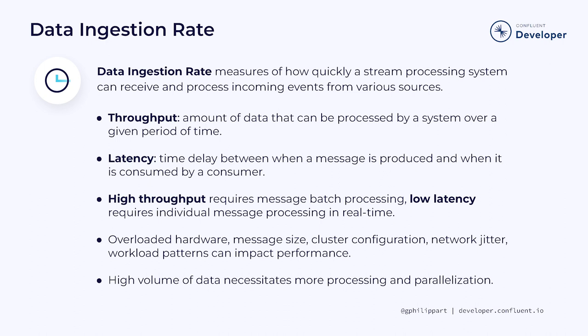An important question you must ask yourself is what kind of volume of events will be generated by the data sources and how fast do you need to process it? The data ingestion rate requirement measures how quickly a stream processing system can receive and process incoming events from various sources. Throughput refers to the amount of data that can be processed by a system over a given period of time, typically measured in messages or bytes per second. Latency, on the other hand, refers to the time delay between when a message is produced and when it is consumed. In Kafka you can optimize for one or the other, but not both at the same time — high-throughput demands message batching which increases latency, but low latency requires individual messages to be processed in real time.